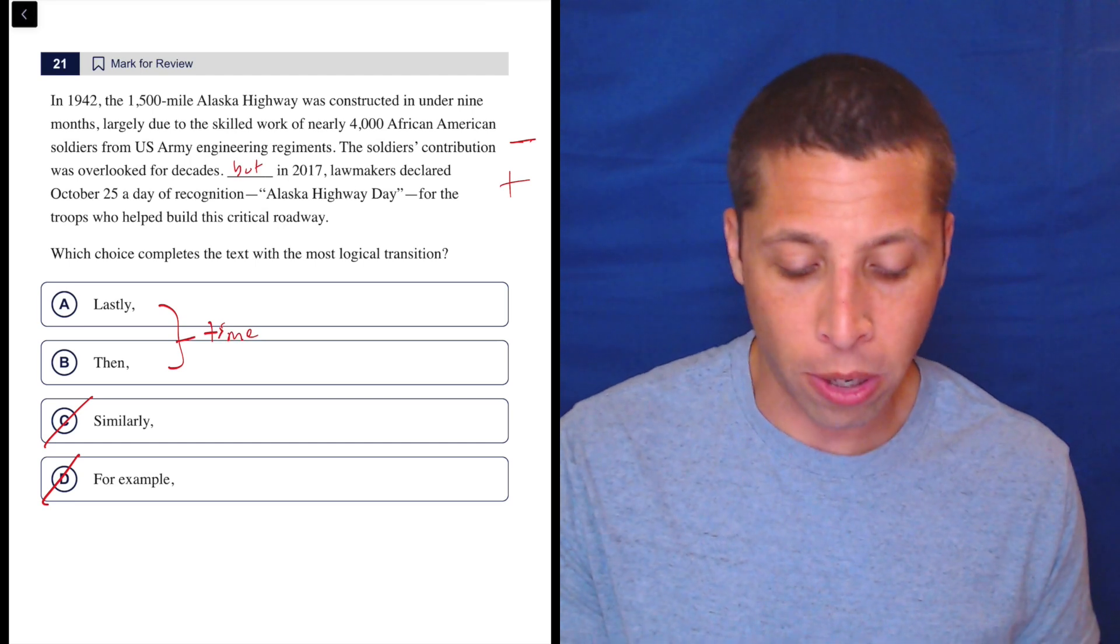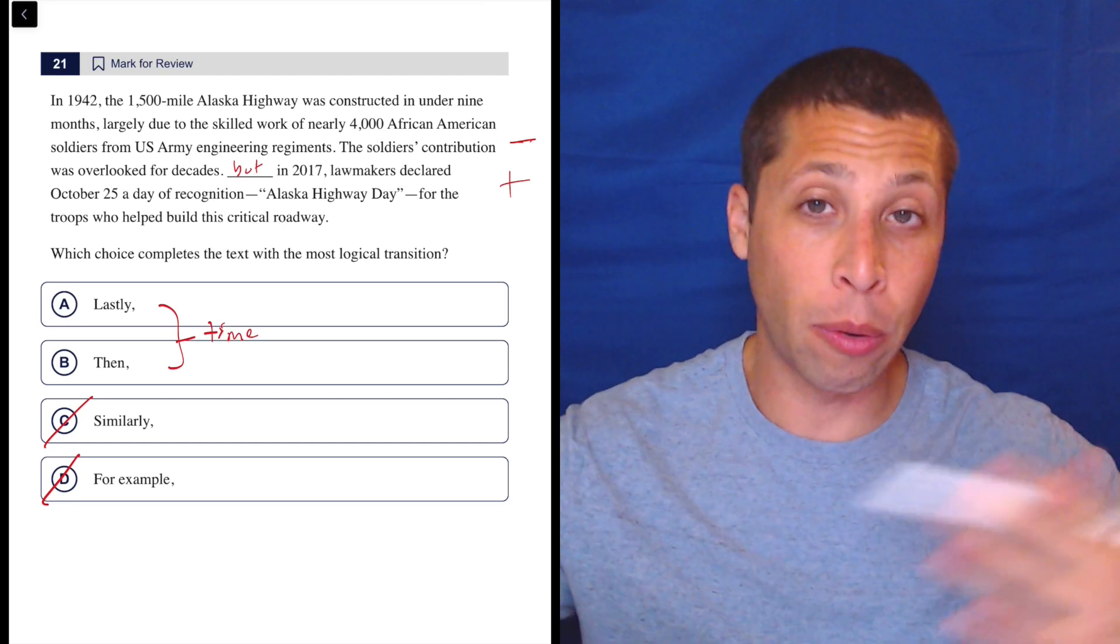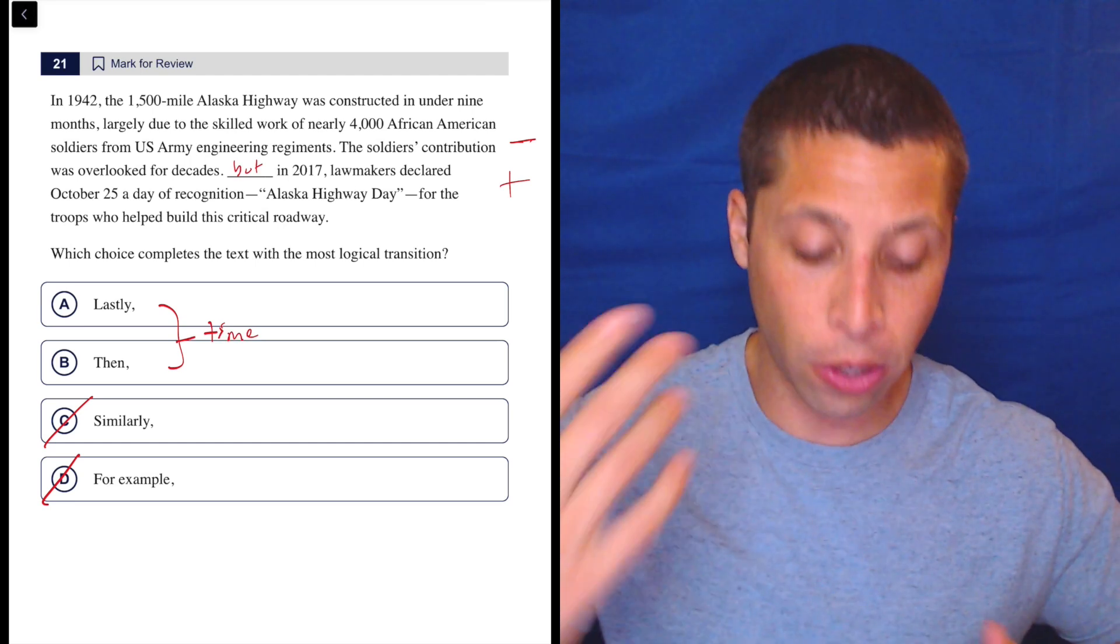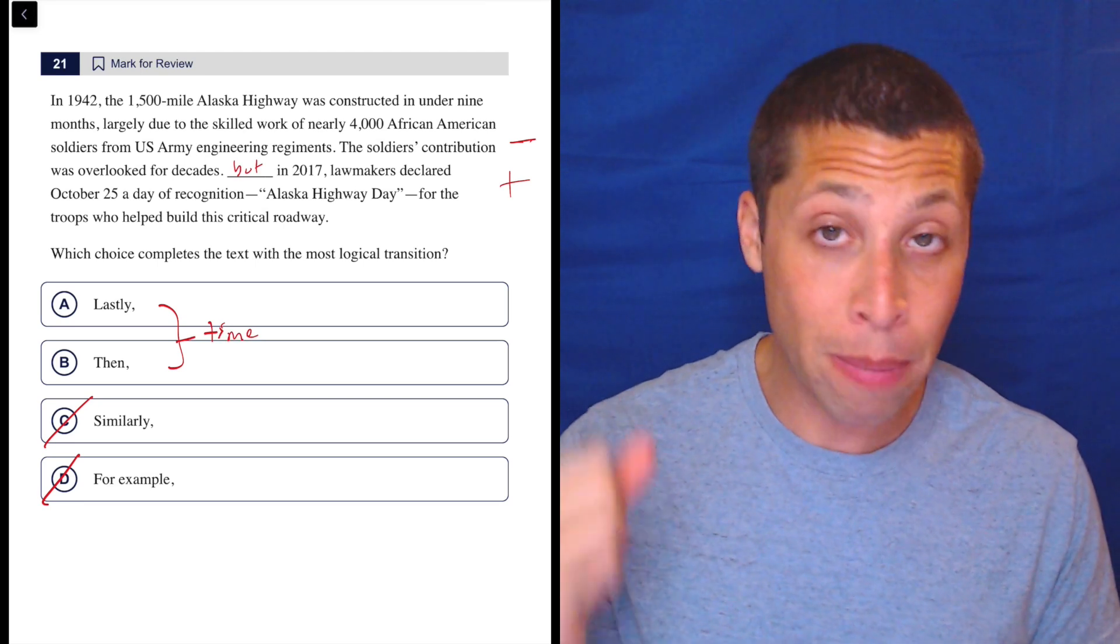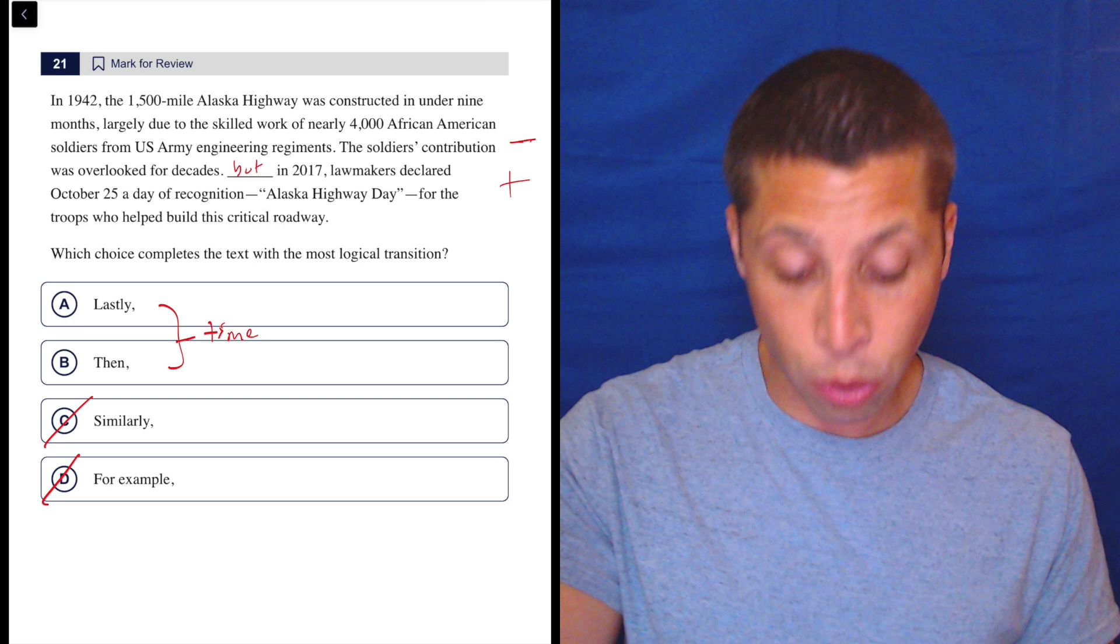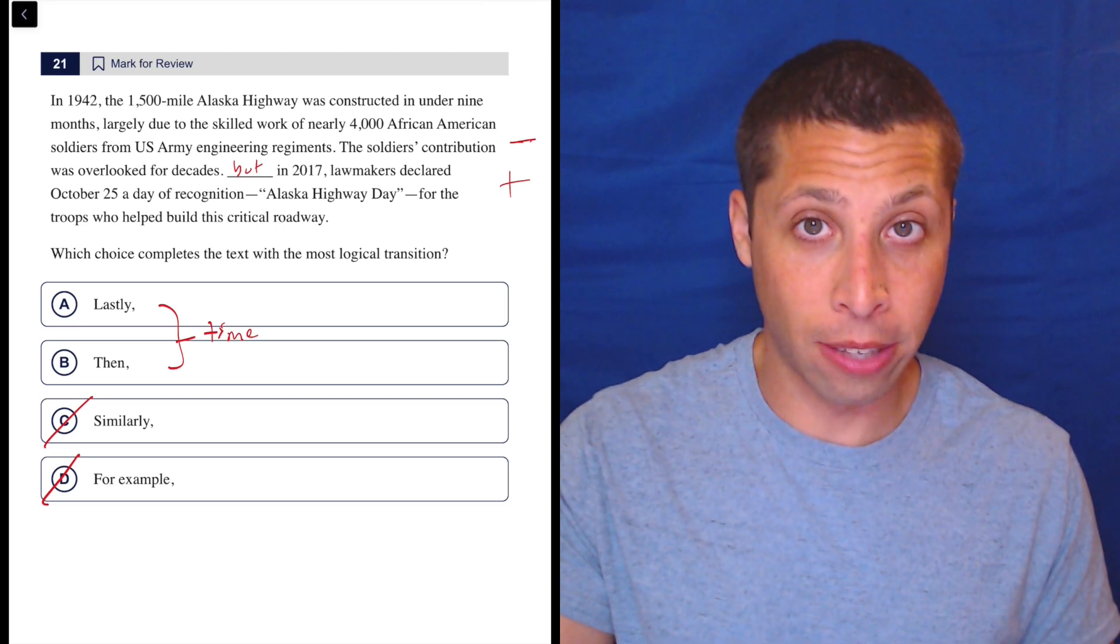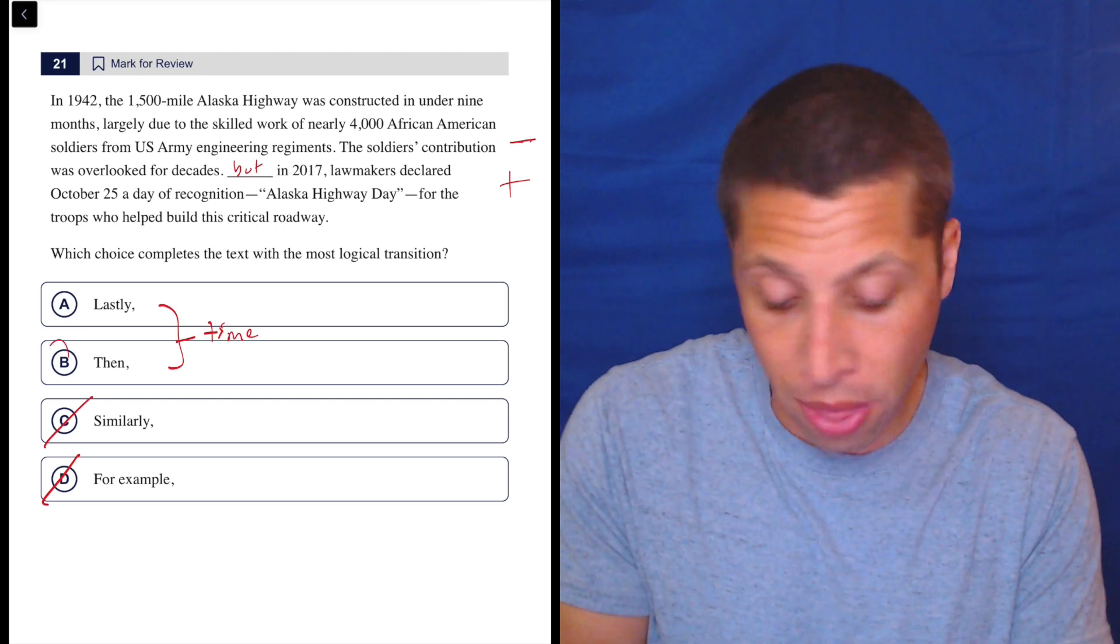So then it comes down to these time words. Now, lastly makes it sound like we've got a lot of different things going on. First, they did this. Then they did this. But to me, there's only really two things. In 1942, they built it. Then in 2017, they were recognized for it. That's kind of it, right? So then is the answer.